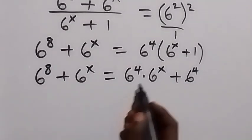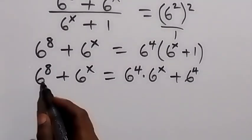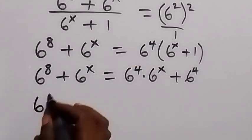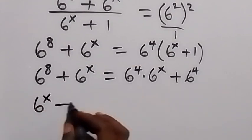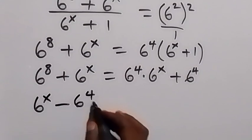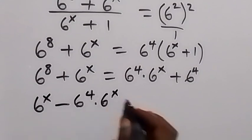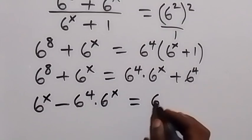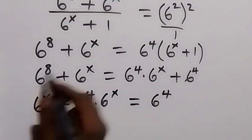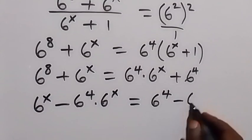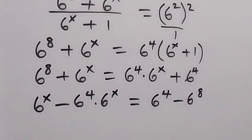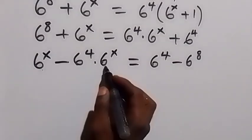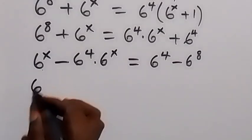Now let's take the x terms together and move 6 raised to power 8 to the other side. We have 6 raised to power x minus 6 raised to power 4 times 6 raised to power x, equals 6 raised to power 4 minus 6 raised to power 8.